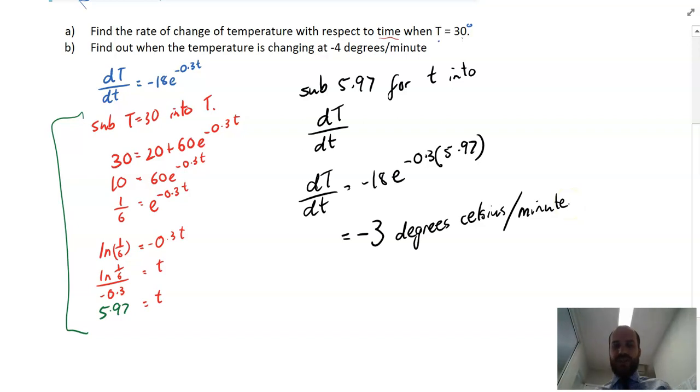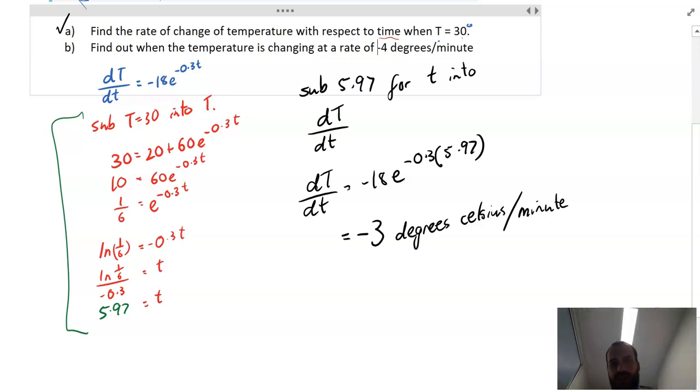So a rate is always going to be something like that, something per something. That was part A. The other bit actually is maybe a little bit easier. Find out when the temperature is changing at a rate of negative 4 degrees per minute. So now it's just a matter of subbing negative 4 degrees per minute in for dT/dt.